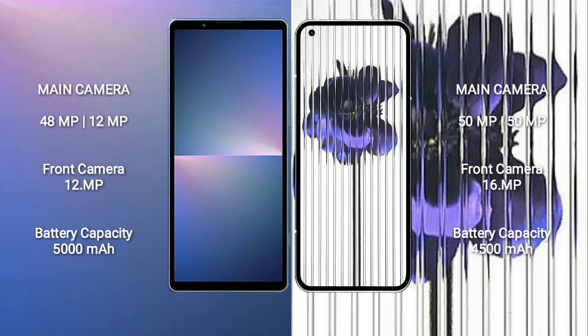Sony X-Player 5 Mark 5 has a dual-camera setup: 48MP plus 12MP, and a front camera of 12MP. Nothing Phone 1 has a dual-camera setup: 50MP plus 15MP, and a front camera of 16MP.